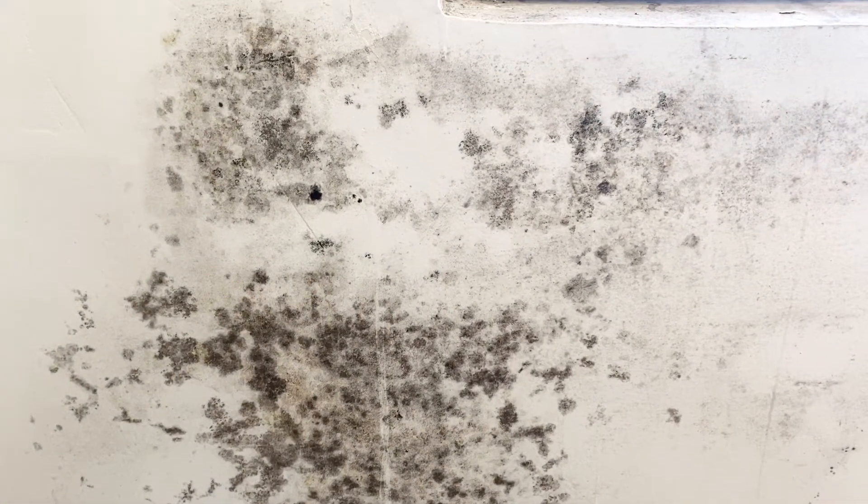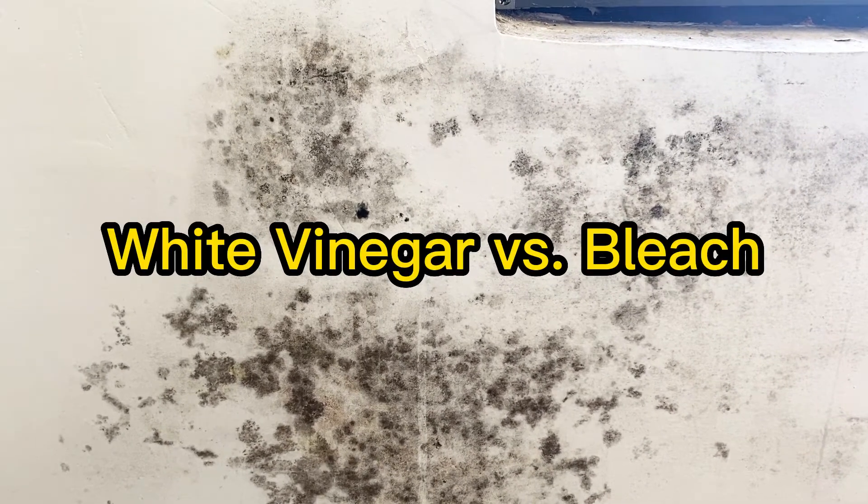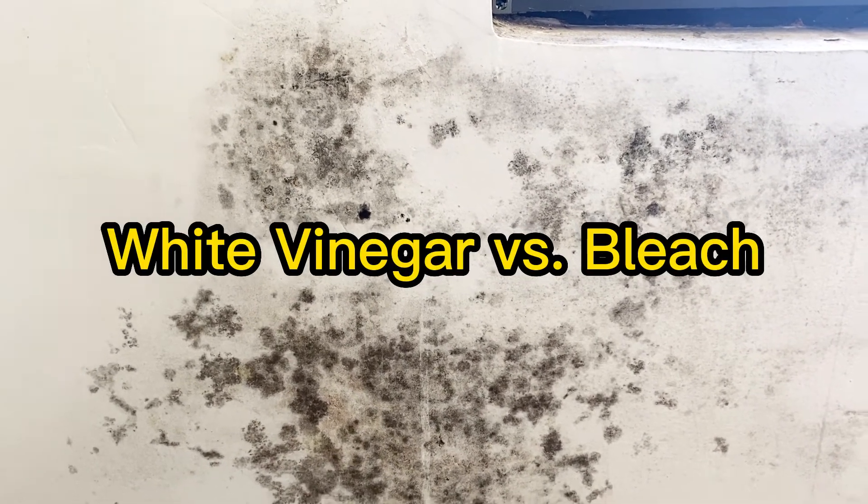So today we're going to be doing a comparison to see what works better at getting mold off a wall. We're going to be using white vinegar versus bleach.